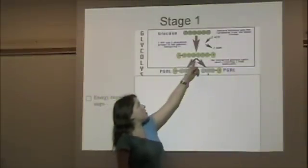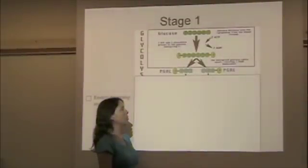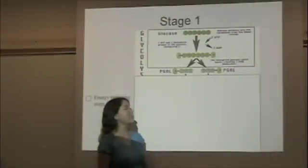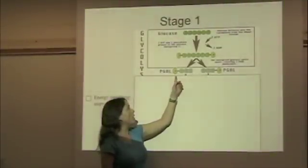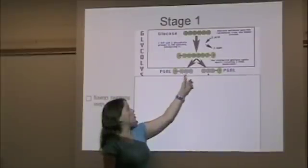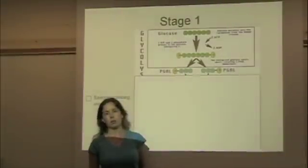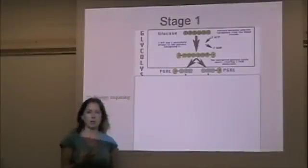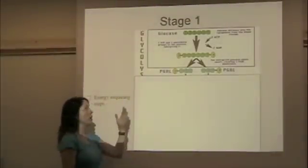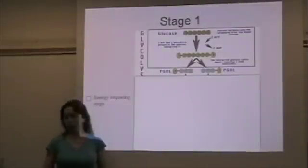This six-carbon molecule with the two phosphates is relatively unstable, so it breaks apart very readily and it forms two molecules called PGALs, which is a three-carbon molecule with a phosphate attached to it. So this is the energy requiring step: ATP comes in and energizes the glucose, and it breaks down into two three-carbon PGALs.